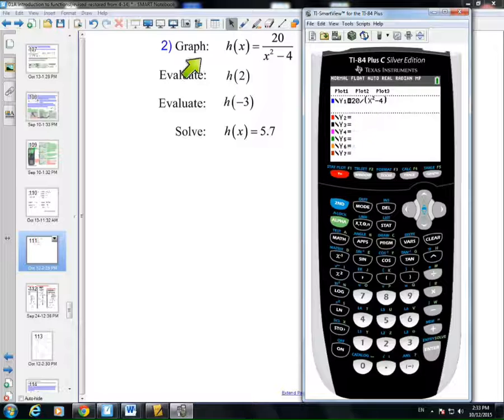First things first, I need to produce a graph of h(x) = 20 over x squared minus 4. You'll notice that this function has no real context, so it's very difficult for me to get an appropriate viewing window. So, the first thing I do is check to see that maybe this function is in the standard viewing window.